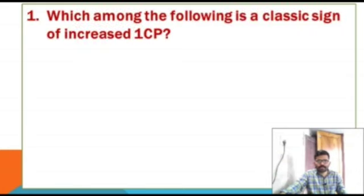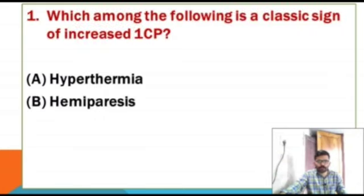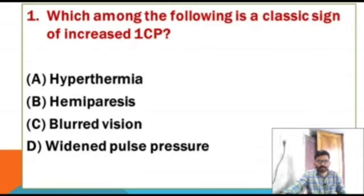Which of the following is a classic sign of increased ICP? Options: hyperthermia, hemiparesis, blurred vision, widened pulse pressure.